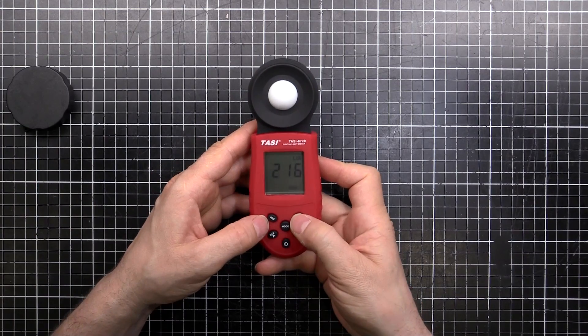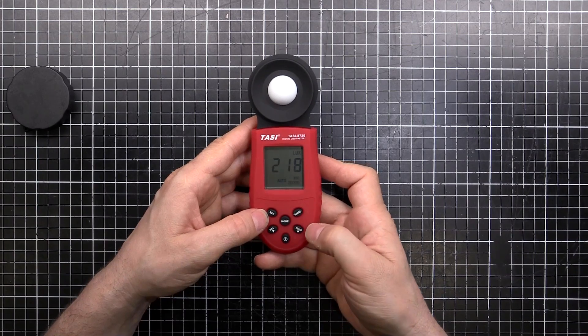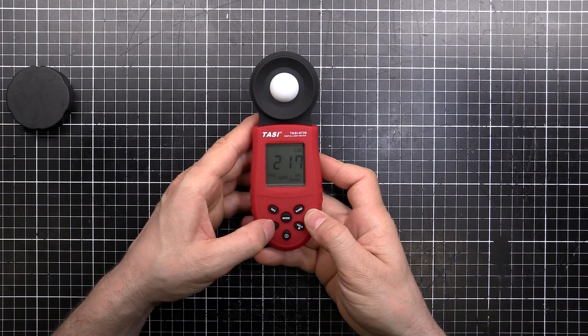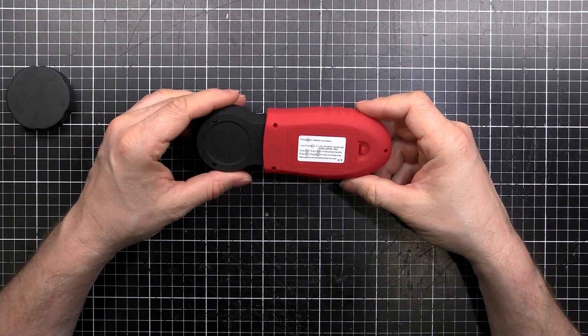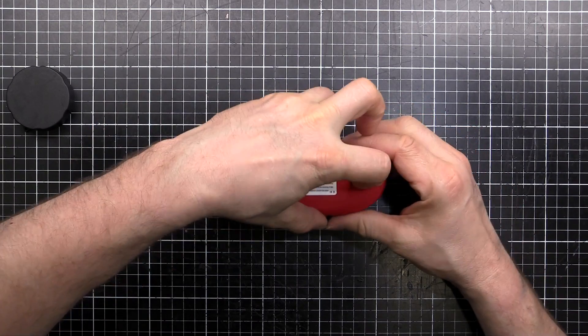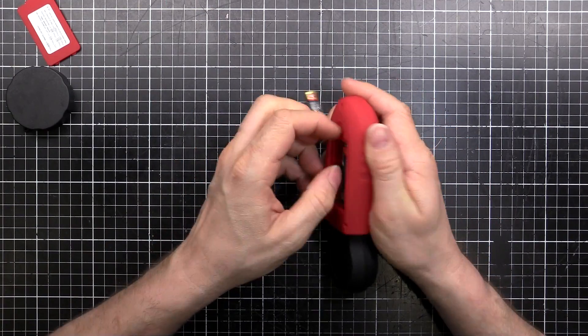You've got a few different buttons here. I can set the range. And there's a hold button there. You know, the usual sort of stuff. You can do the max hold and all that sort of gear. But what I'm interested in is to have a look inside and see how it works. So, I'll get the screwdriver out and we'll see what's inside.